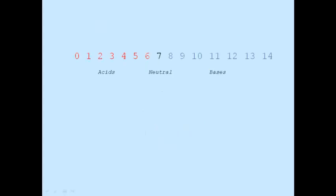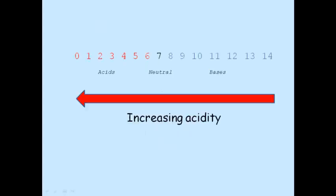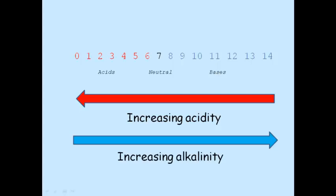On the pH scale, the smaller the number, the more acidic. The larger the number, the less acidic or more alkaline or basic a solution is.